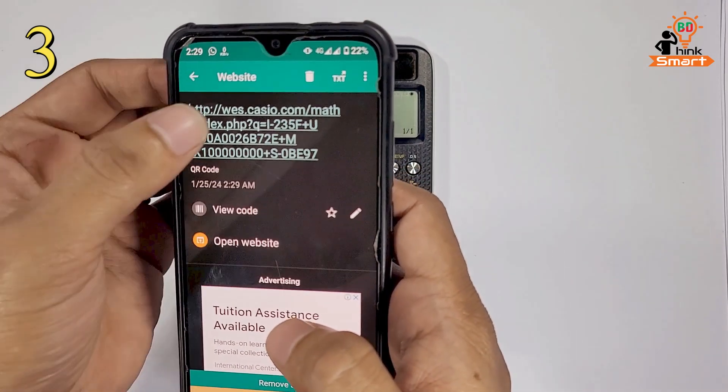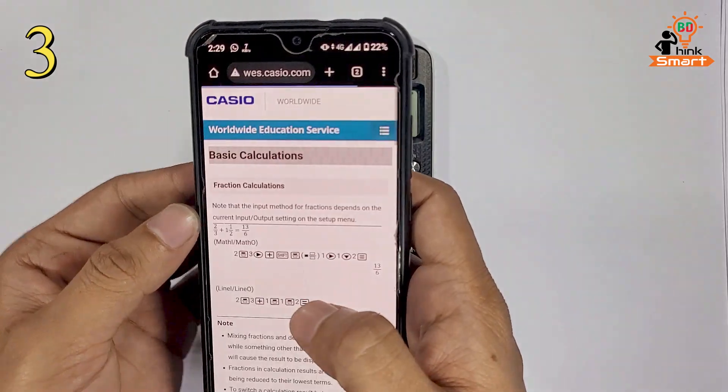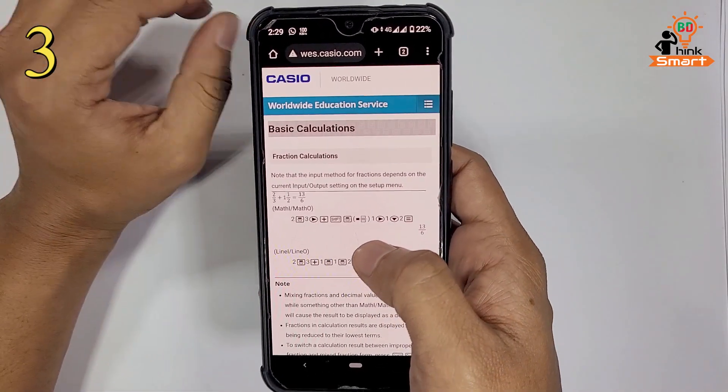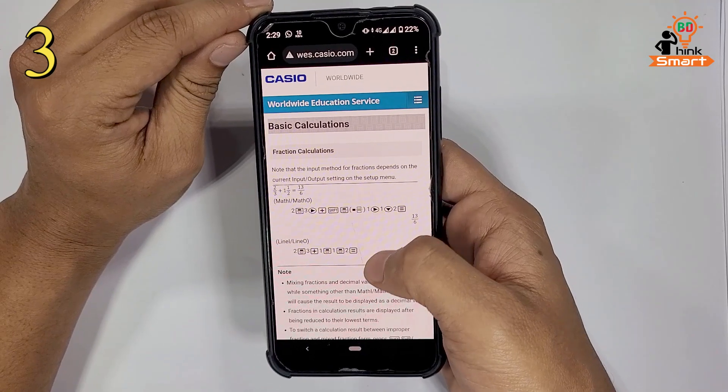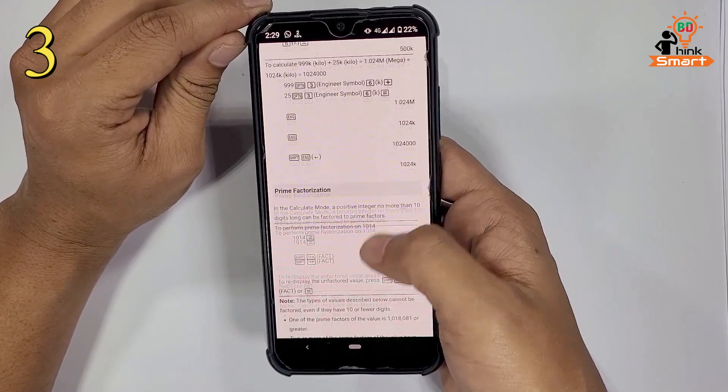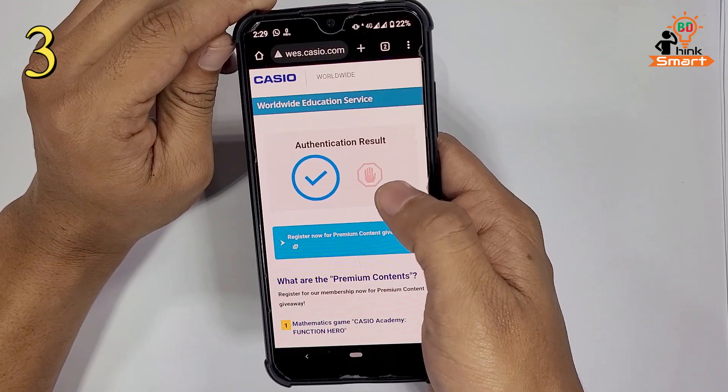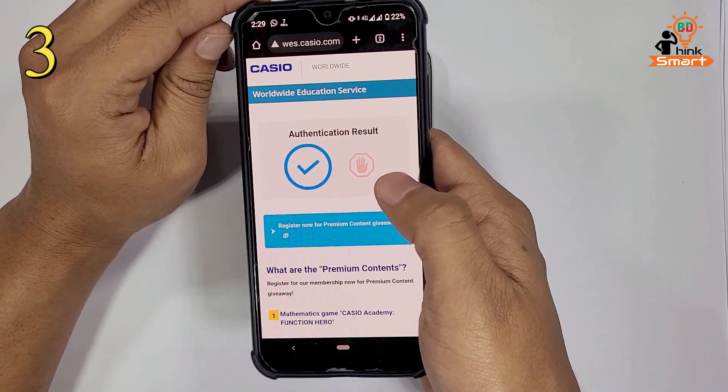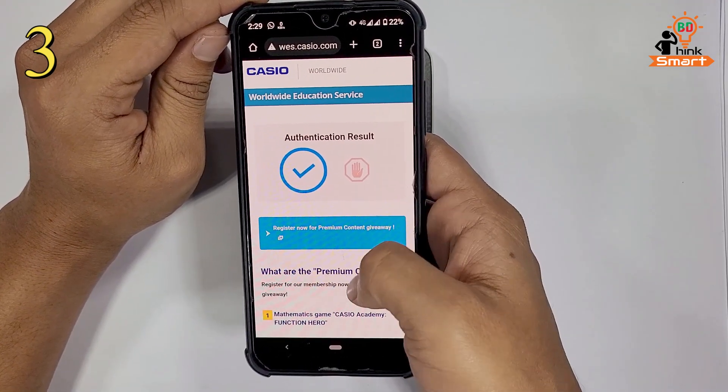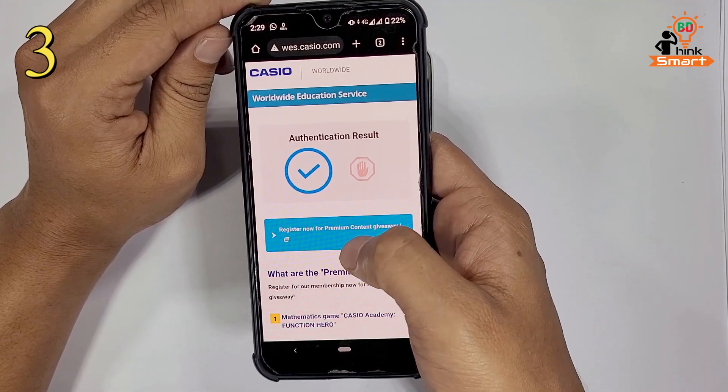It will give you a link. Visit the link. It will take you to Casio's website. Scroll down the page. You will see an authenticity check option. Click on it and you will see the authentication result. As you can see, the product is original.